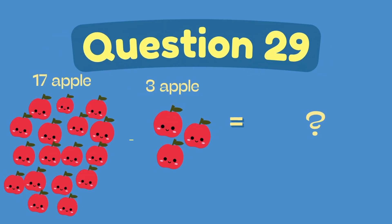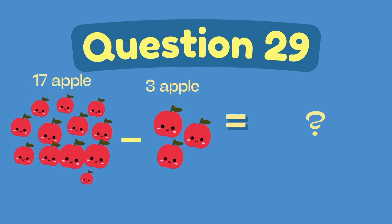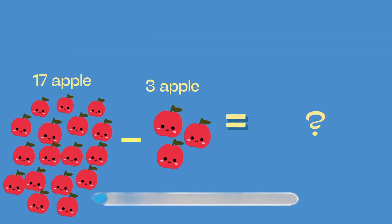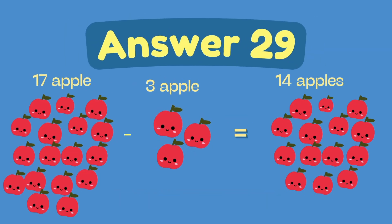What is 7 minus 3? What is 9 minus 3? The answer is 3.